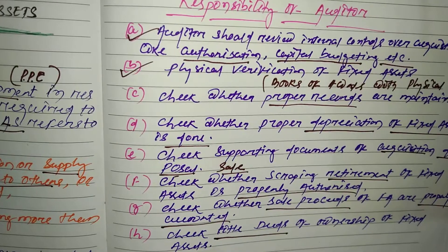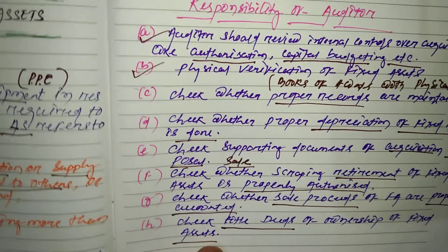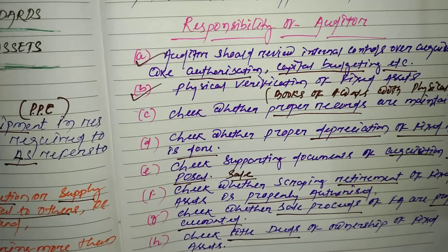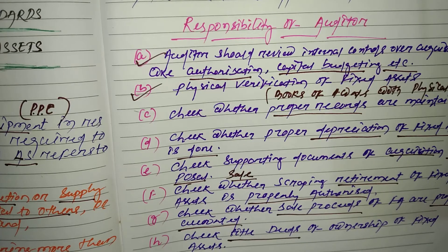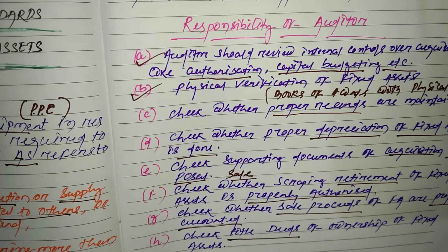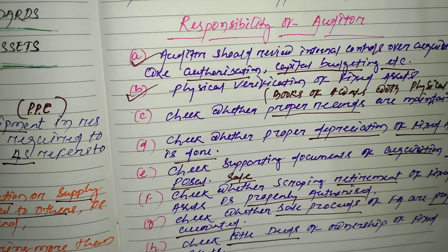The auditor needs to check the title deeds of ownership of fixed assets. These are all the essential and important points which need to be checked by the auditor in the case of an audit of fixed assets.